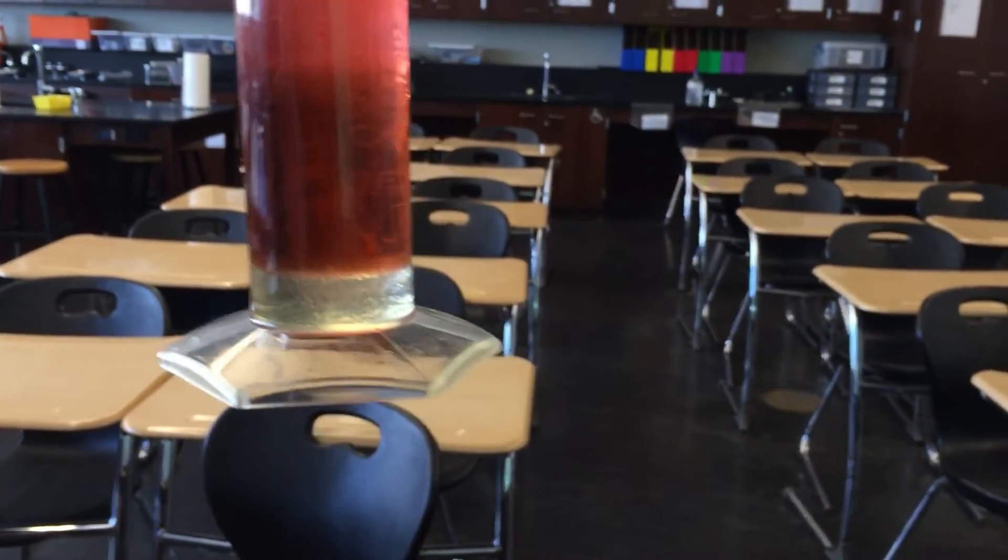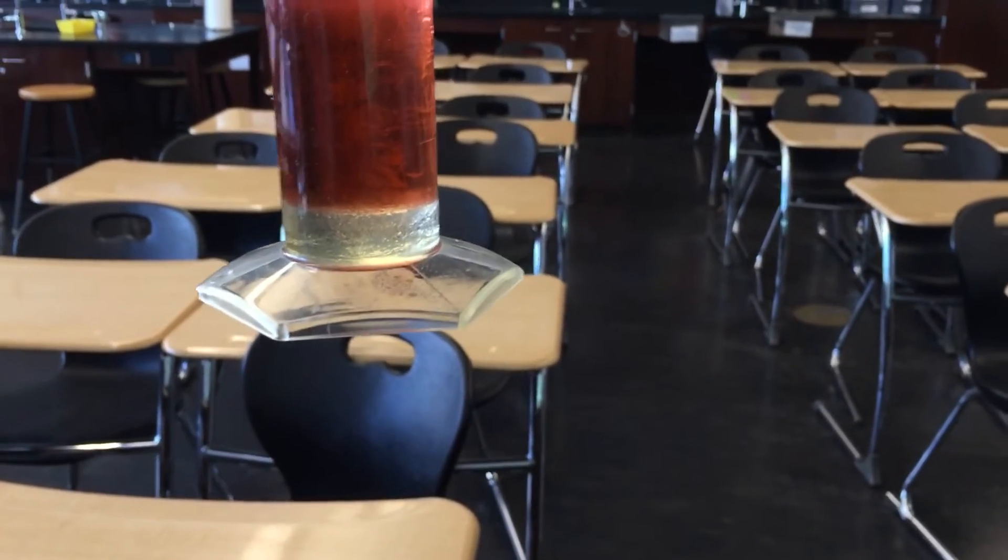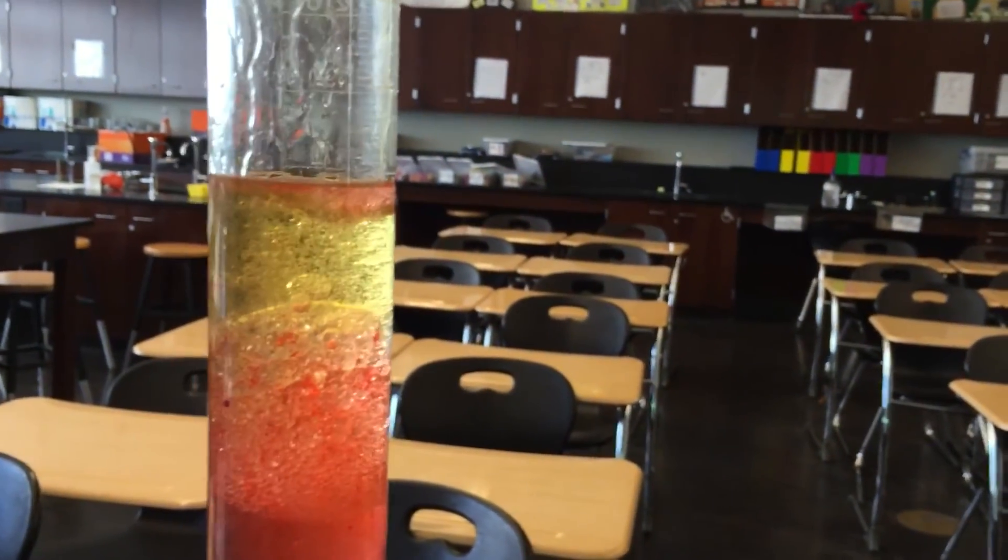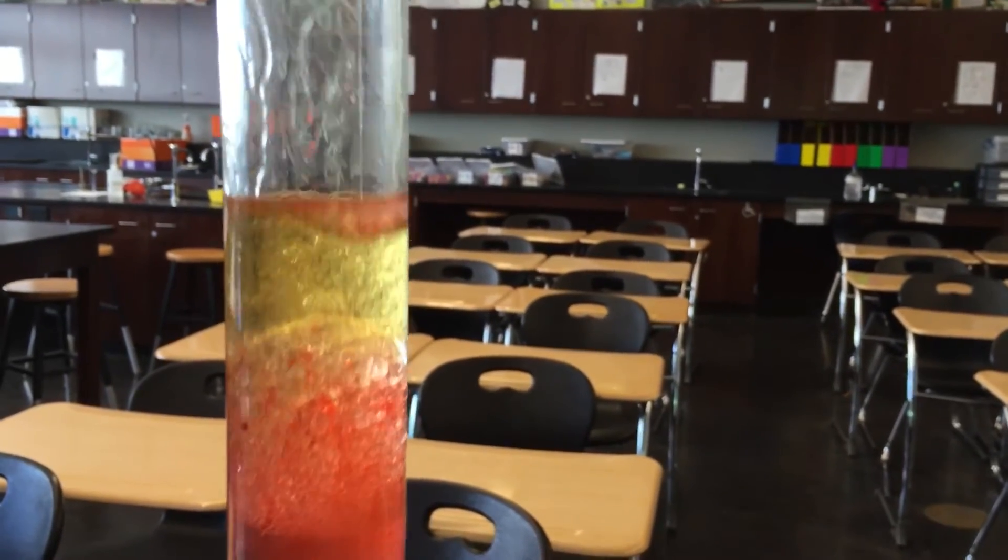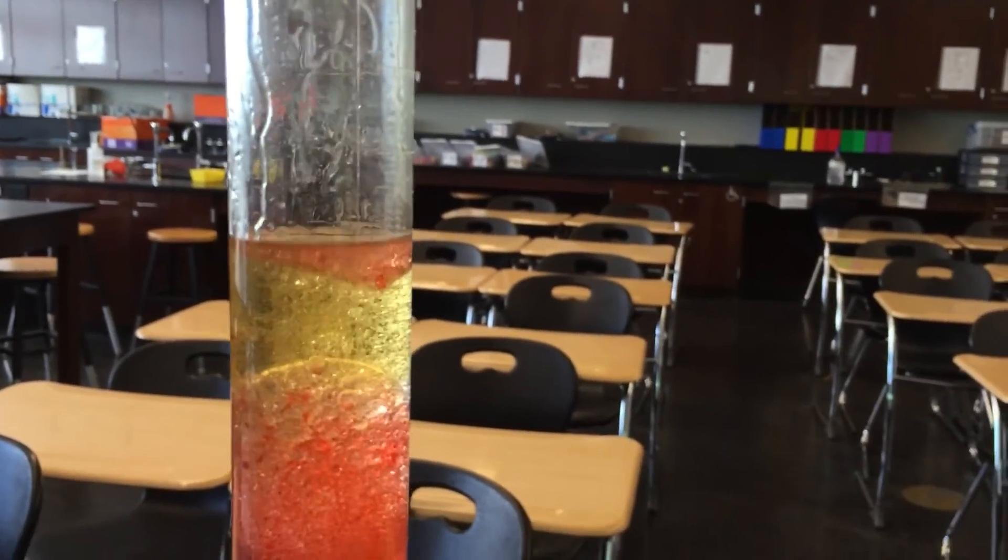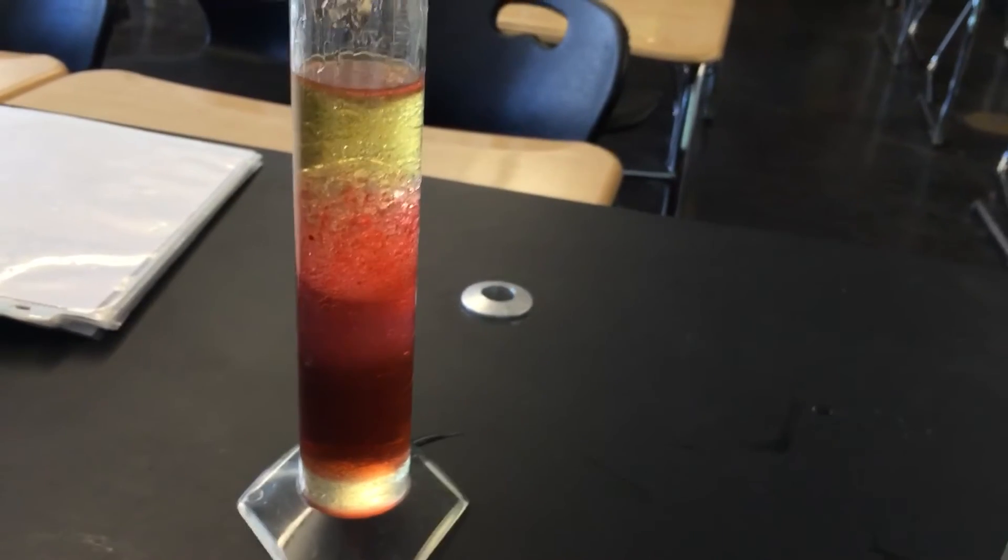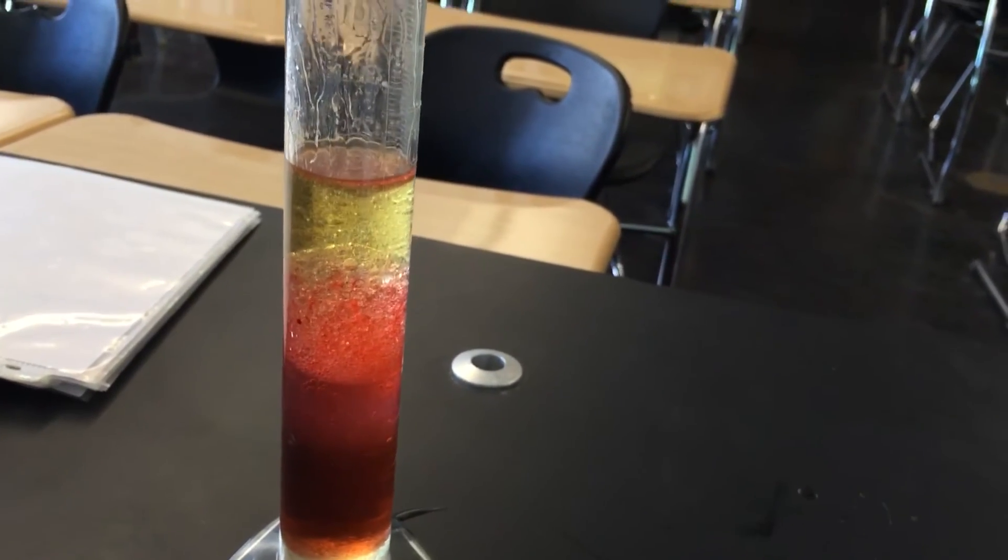And then, so which one is the most viscous? It looks like that was the corn syrup. And then which one was the least viscous and the lightest or the thinnest. I can't really tell, but it looks like it might be canola oil over here at the top. It might be canola oil at the top.